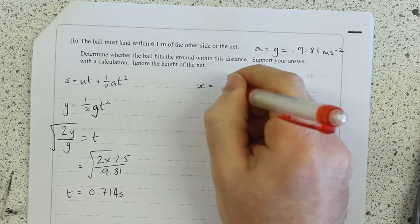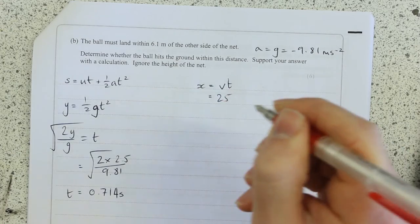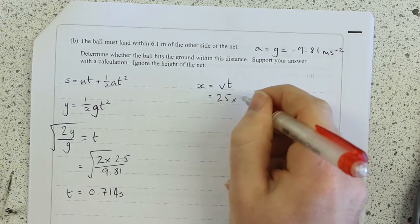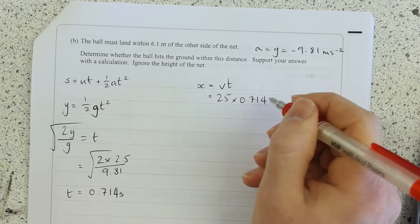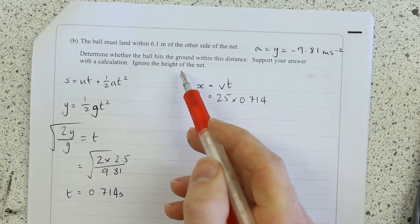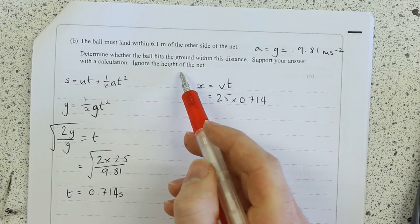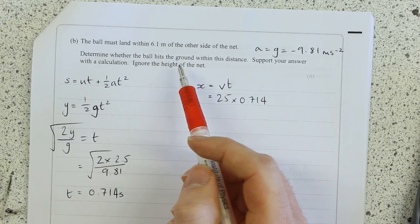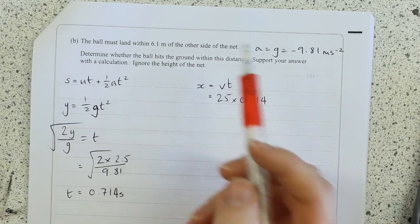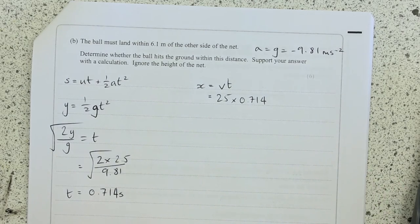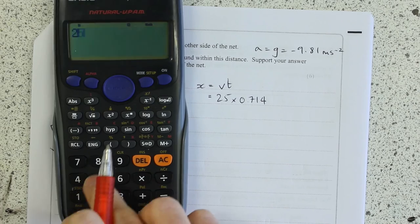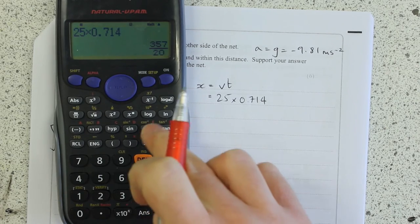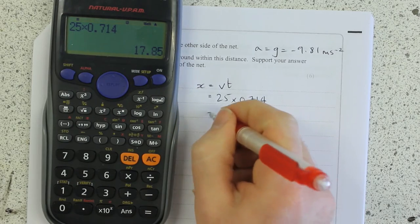Well, distance is speed times time, so 25 times 0.714. If you're told to ignore the height from the net, you're not told to ignore air resistance, but that is what we do whenever we do projectiles. 25 times 0.714 equals 17.85.